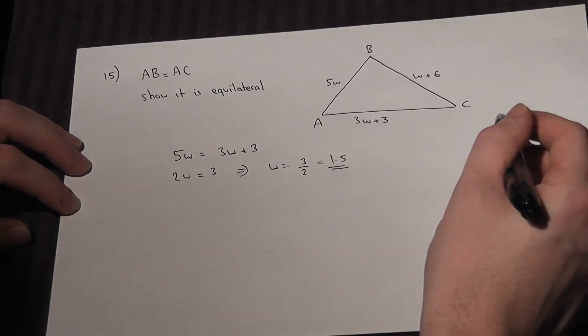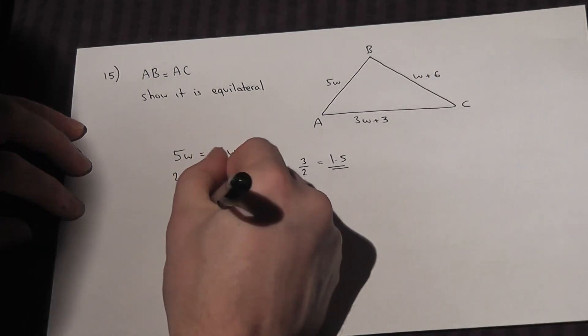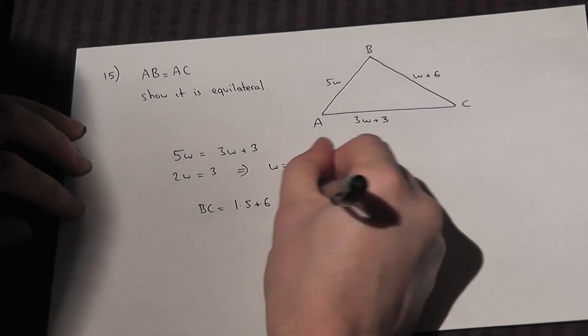We can therefore find what each of the lengths are. Well W plus 6, which is BC, will equal 1.5 plus 6, which equals 7.5.